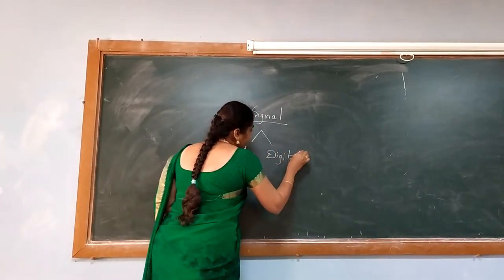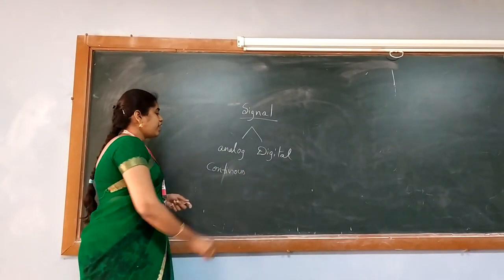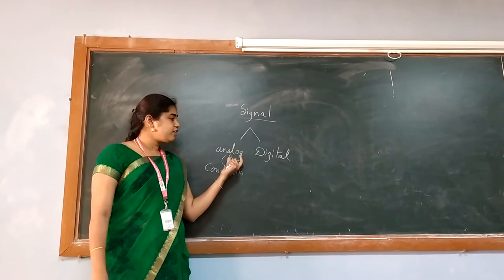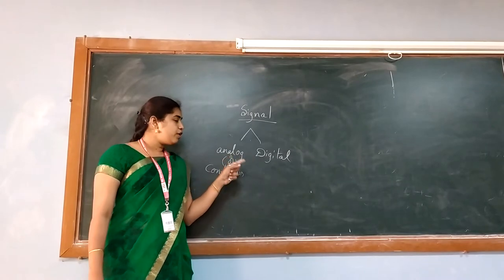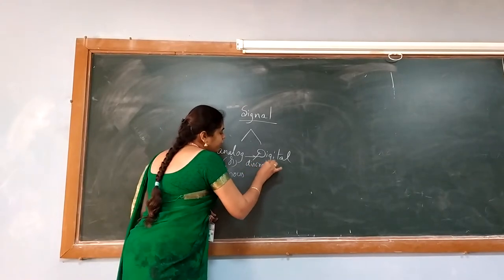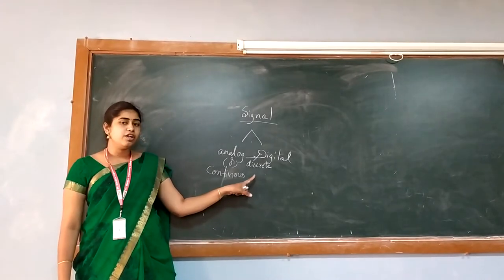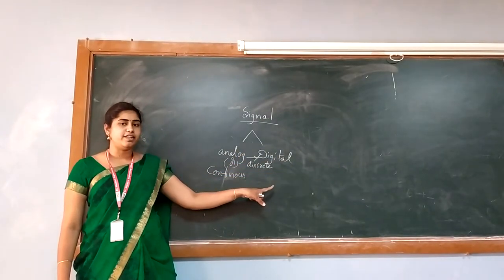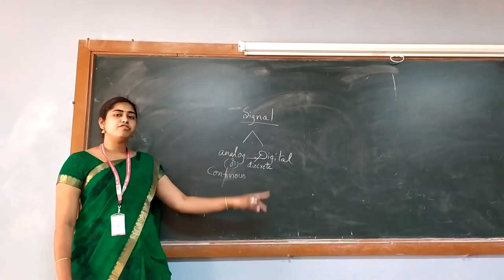This analog form is also called as continuous waveform, while digital is called as a digital signal. This analog signal can be converted into a digital signal by following two procedures. Between analog and digital, there is a signal called discrete signal. Any signal should be converted into a discrete signal using a process called sampling. After obtaining a discrete signal, you can convert it into a digital signal by following a process called quantization.